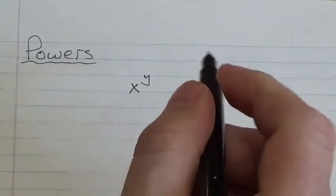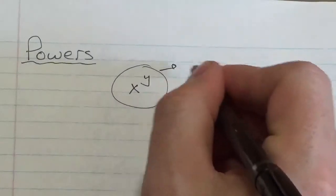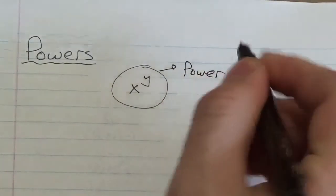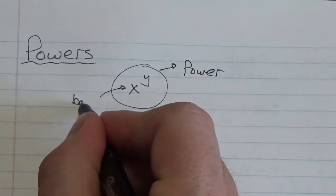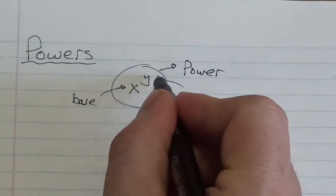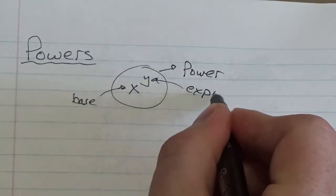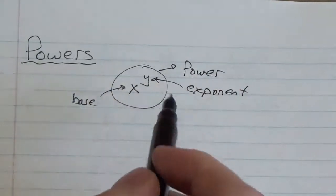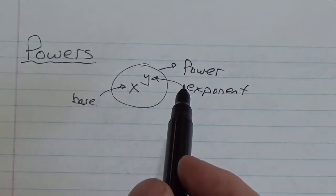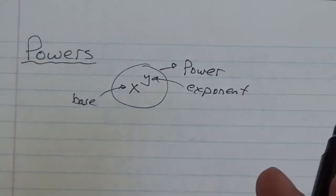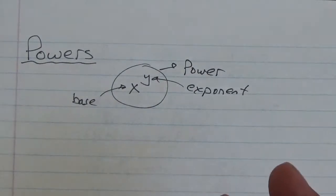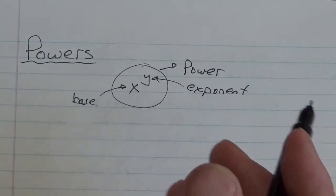I'm gonna write this out here: x to the y. That right there, everybody, this is a power. So this whole thing here, this is what we call a power. And a power consists of two parts: you've got your base, and then you've got your exponent. Now sometimes, frequently, when people use the word power, they're actually referring to just the exponent, and that's okay because that doesn't really cause any kind of confusion.